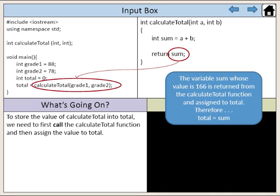The variable sum, whose value is 166, is returned from the calculateTotal function and assigned to total. Therefore, total is assigned the value of sum.